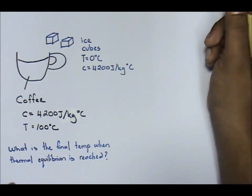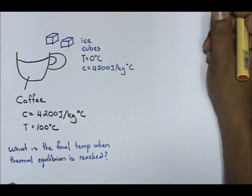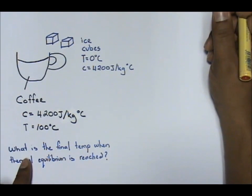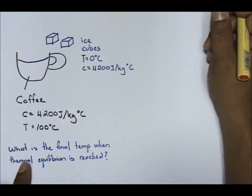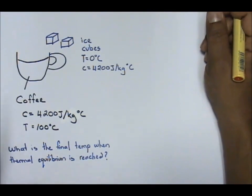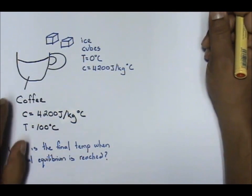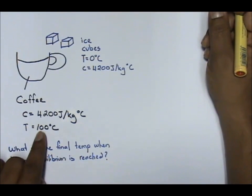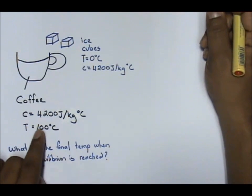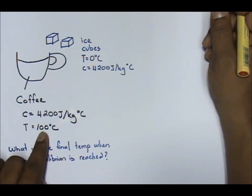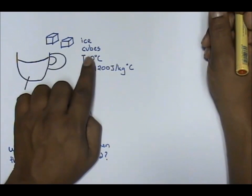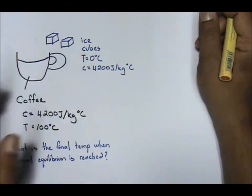Okay guys, now let us have a look at this question. This question is asking you: what is the final temperature when thermal equilibrium is reached? Now, very easy. You have coffee, and the temperature of coffee is at 100 degrees Celsius. You have ice cubes, and the temperature of ice cubes is at 0 degrees Celsius.